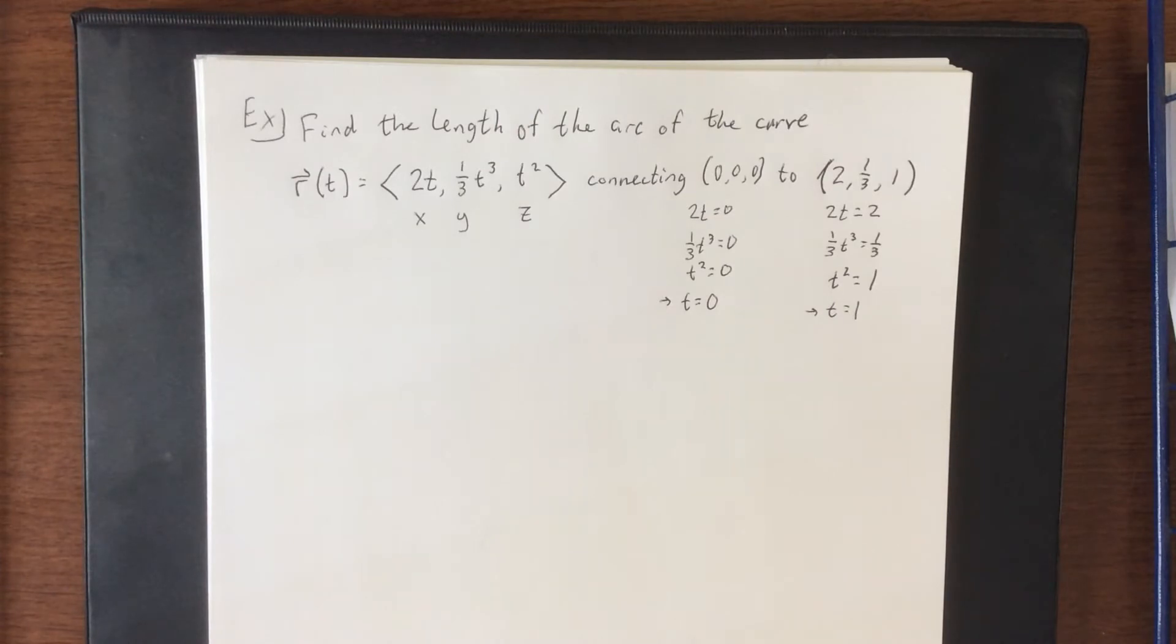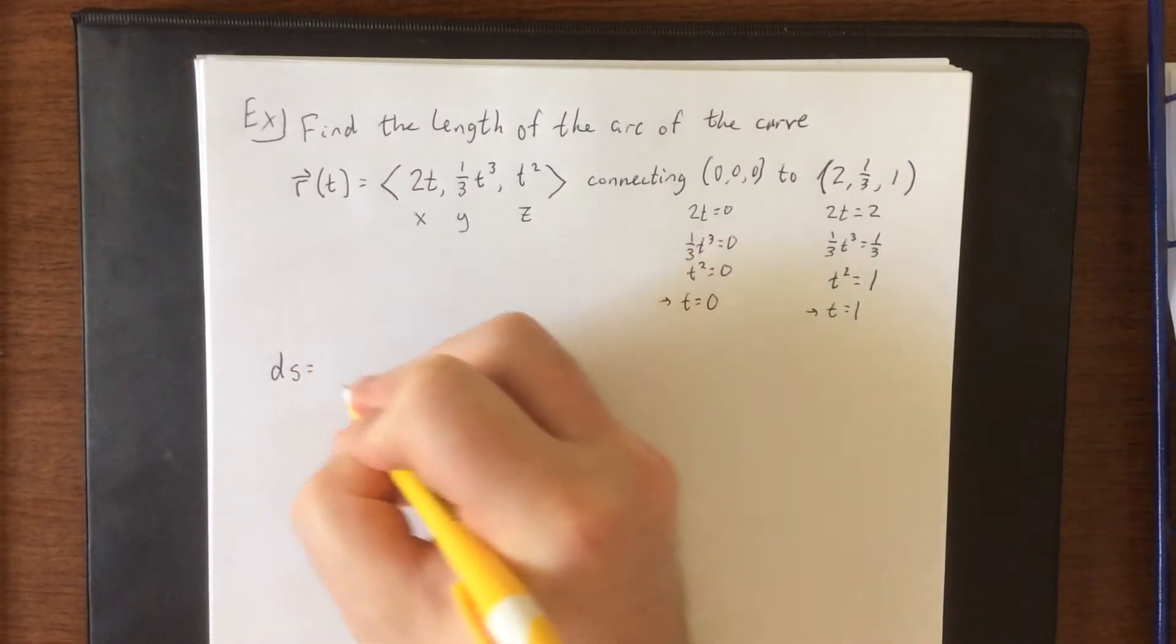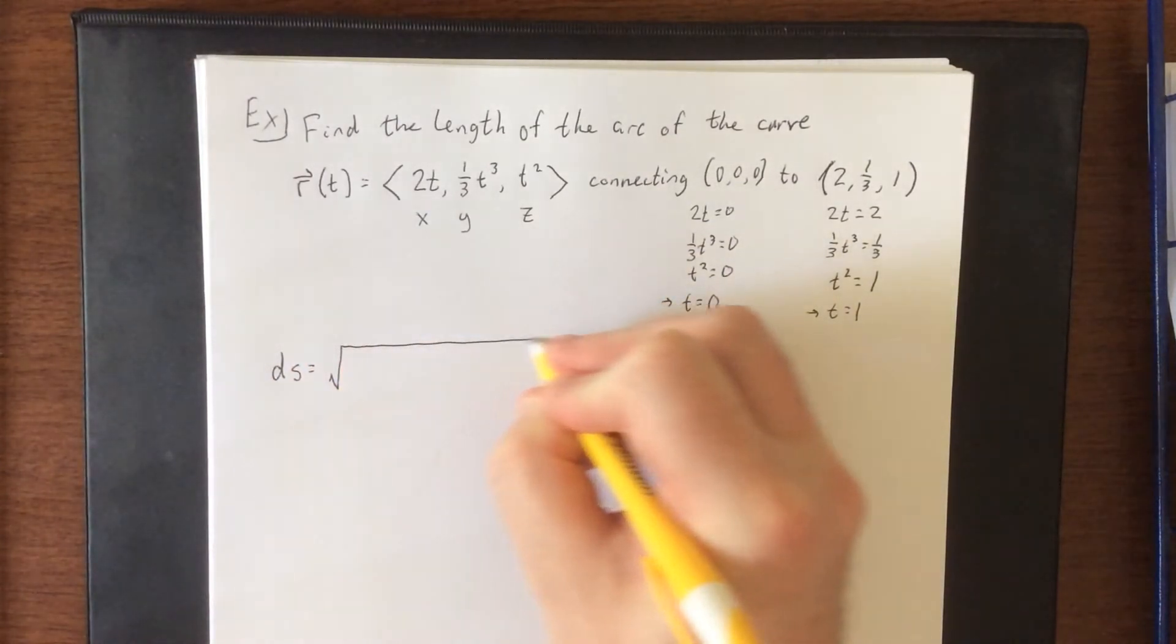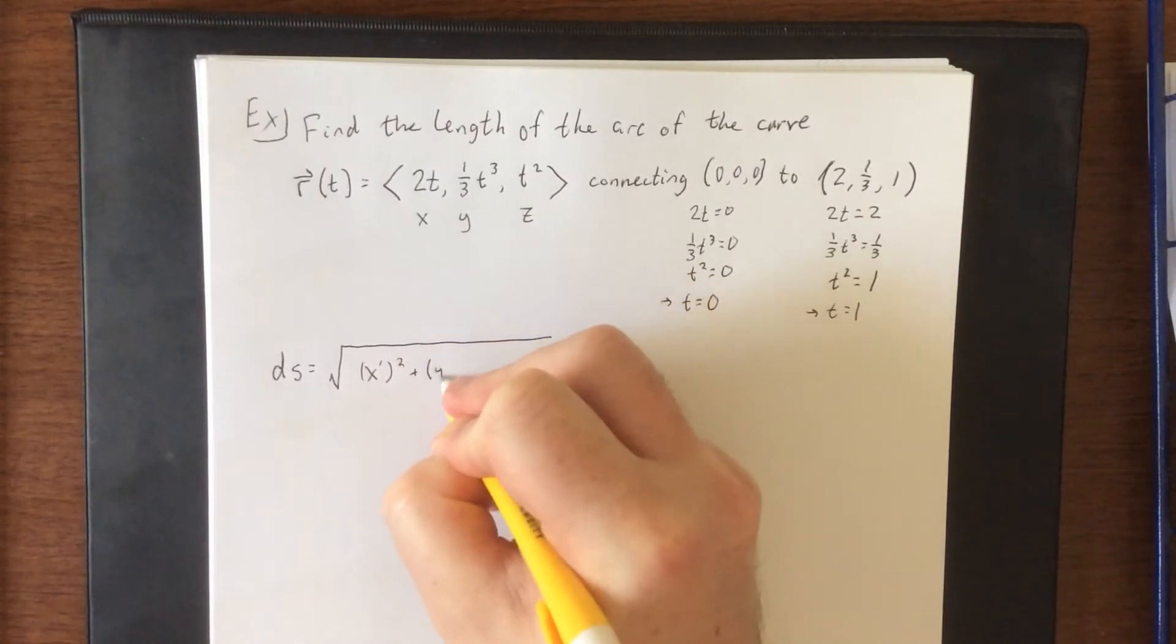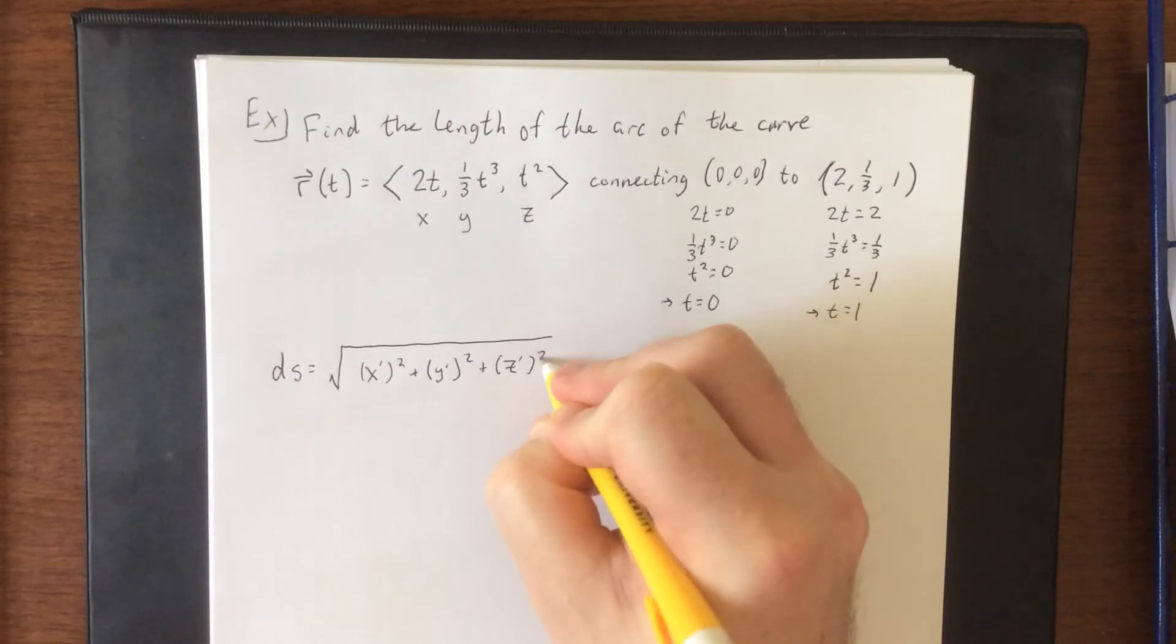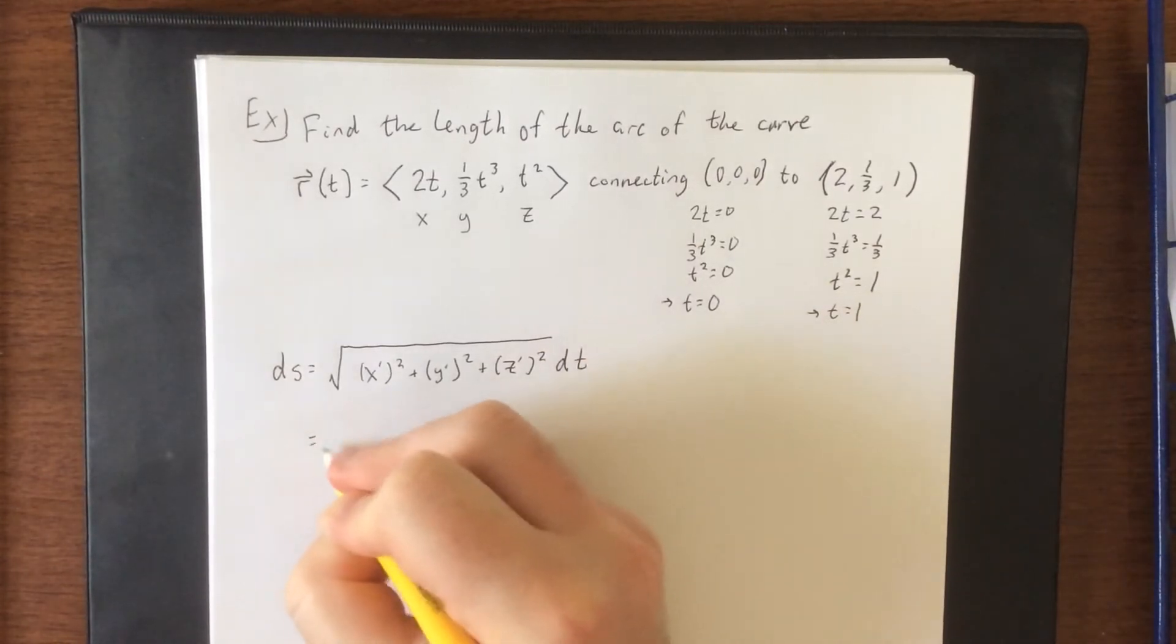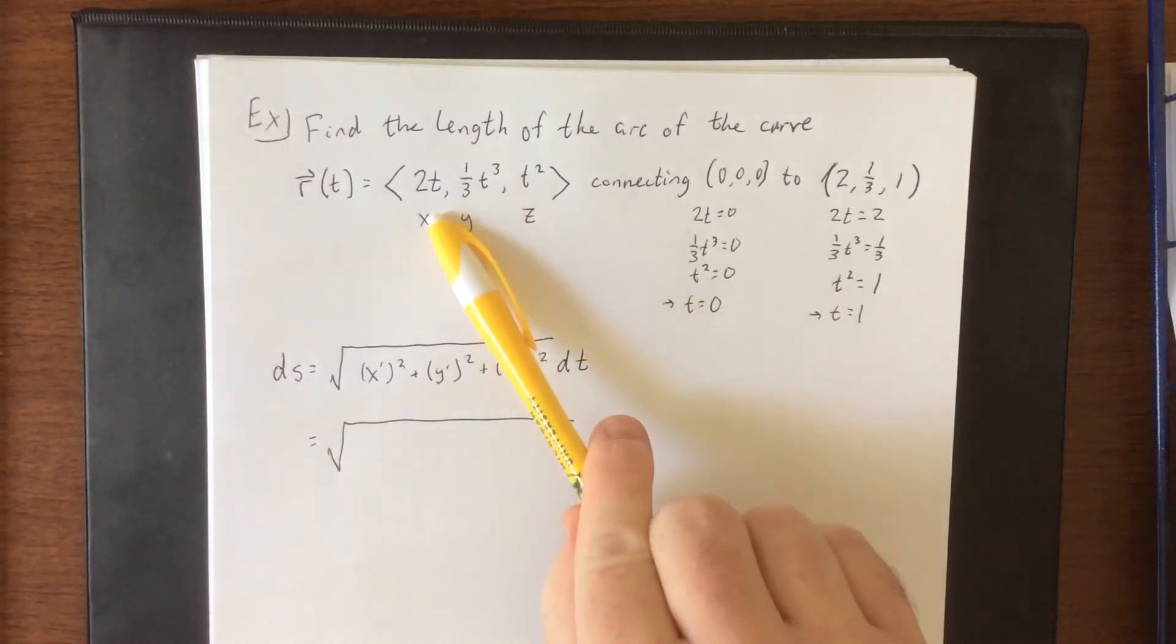Next, to set up our ds, we're going to need some derivatives. So this will be x prime squared plus y prime squared plus z prime squared to shorthand those derivatives a bit. Now this is saying we're going to be taking the derivatives of each of the three component functions that we have up here.